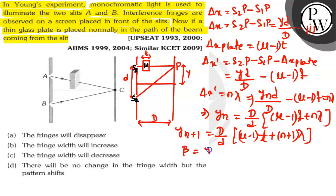For fringe width we have beta equals yN plus 1 minus yN. On putting the values, we get capital D by small d into mu minus 1 into t plus N plus 1 into lambda.